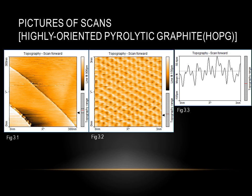The figure on the left shows a wide scan of HOPG surface and step terraces are imaged. The arrangement of graphite atoms are shown on the right and the pattern displays the hexagonal arrangement of these atoms.